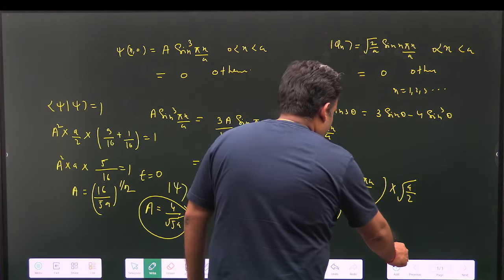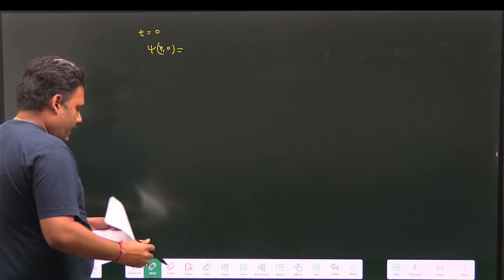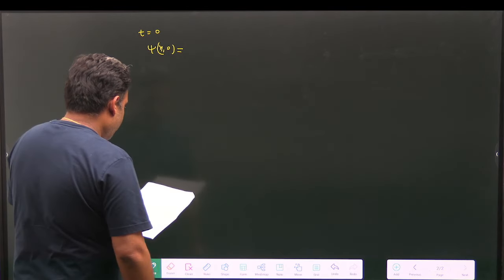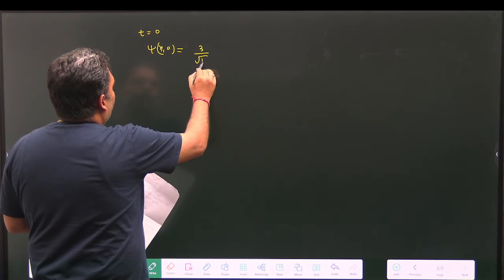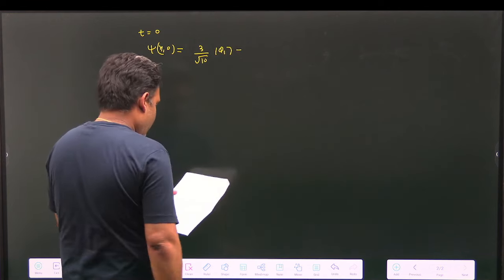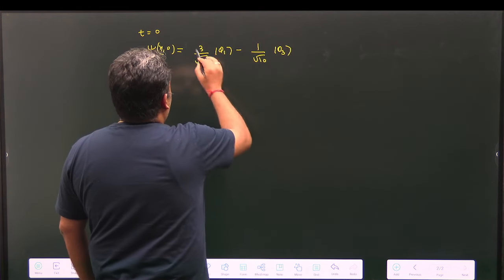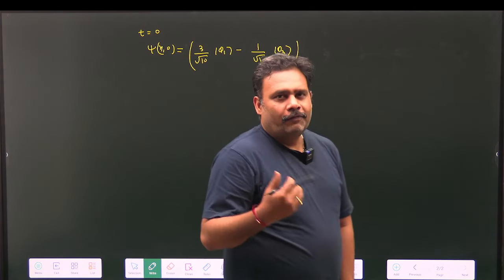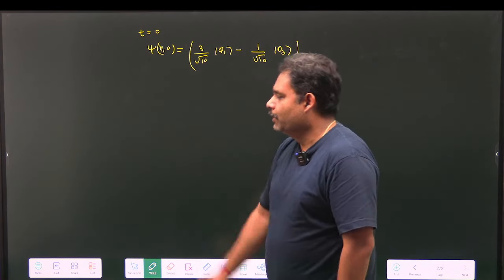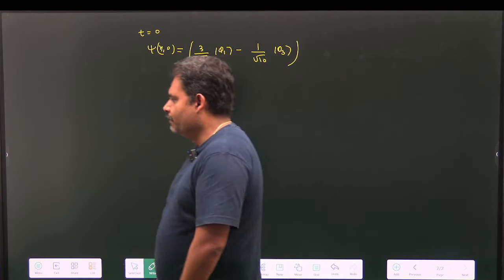Substituting the value of A, we find ψ(x, 0) = (3/√10)|φ₁⟩ − (1/√10)|φ₃⟩. We can verify: 9/10 + 1/10 = 1, confirming the wave function is normalized.